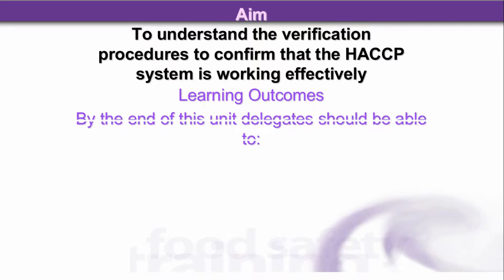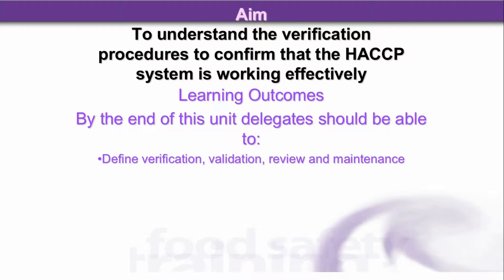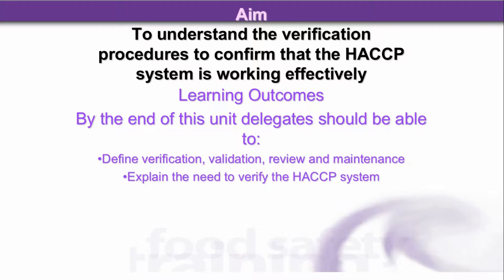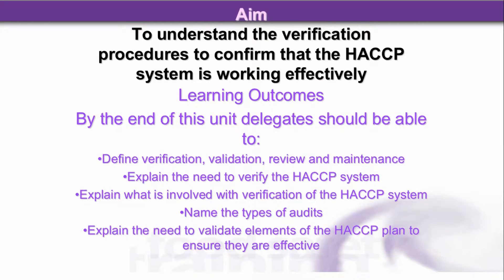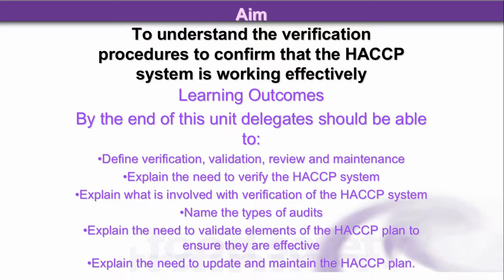Learning outcomes: by the end of this unit, delegates should be able to define Verification, Validation, Review and Maintenance; explain the need to verify the HACCP system; explain what is involved with verification of the HACCP system; name the types of audits; explain the need to validate elements of the HACCP plan to ensure they're effective; and explain the need to update and maintain the HACCP plan.